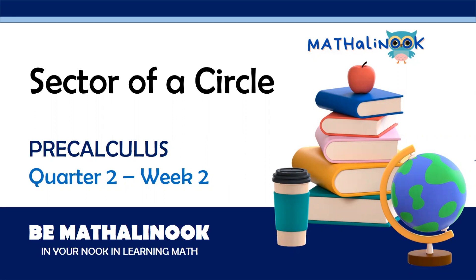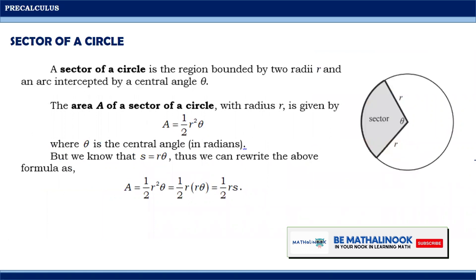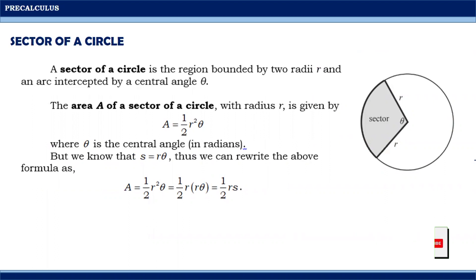Good day everyone. In this video we will discuss the sector of a circle. A sector of a circle is the region bounded by two radii r and an arc intercepted by a central angle theta. Looking at the illustration, the sector is this region colored in gray, which is a part of a circle bounded by two radii.